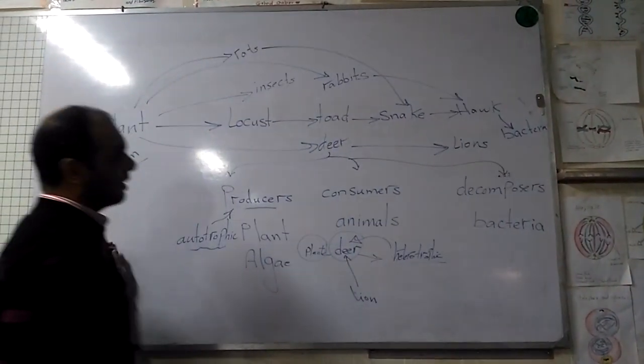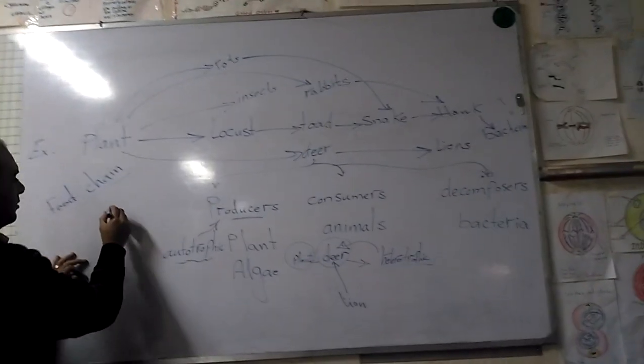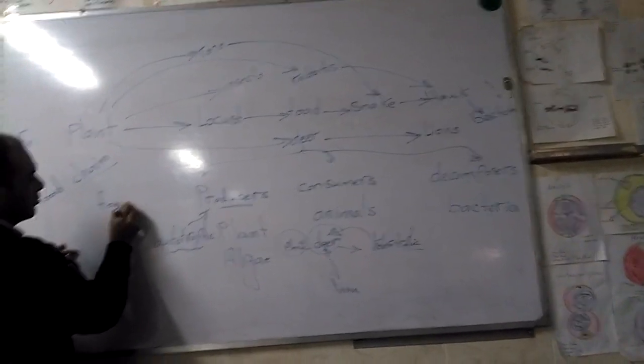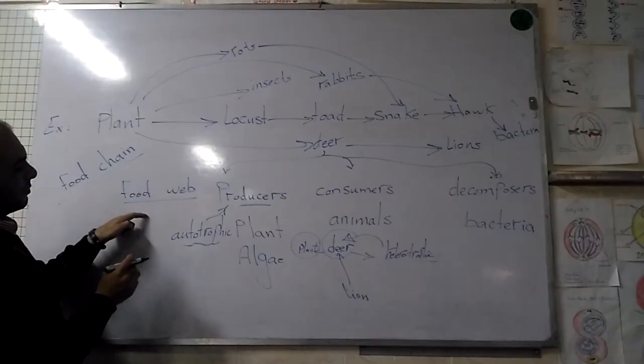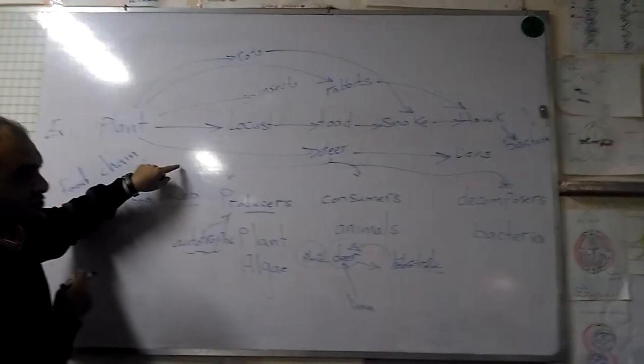We can say about this shape, it's a food web. A food web is a group of food chains.